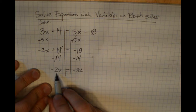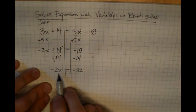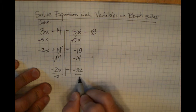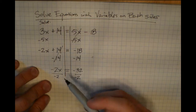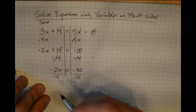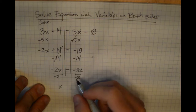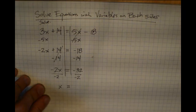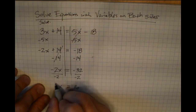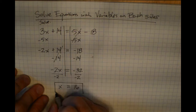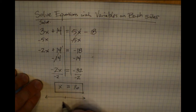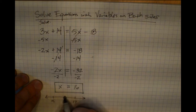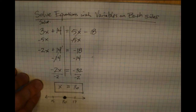On the left side I have negative 2x, and I don't want the negative 2 there, so I do the inverse: divide both sides by negative 2. Negative 2 divided by negative 2 is positive 1, so I have 1x. Negative 32 divided by negative 2 is positive 16. Graphically this looks like a number line with a closed circle on 16, since x equals just 16.